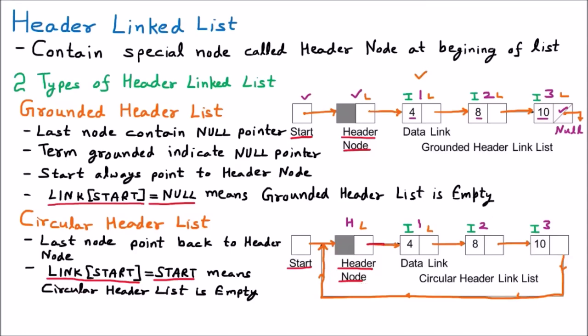If we talk about the circular header link list, these header lists are always circular by default. Whenever we take a header list, most of the time it will be circular unless they specifically mention it is a grounded list. So if somebody asks you to take a header list, you should always take the circular header. Header list is always circular unless stated otherwise.